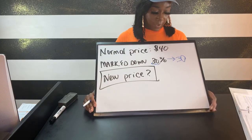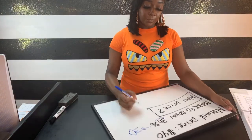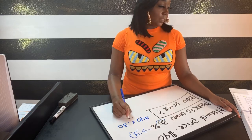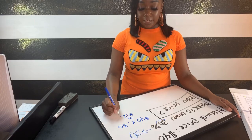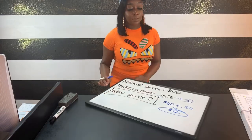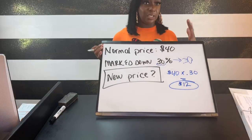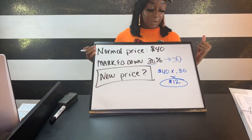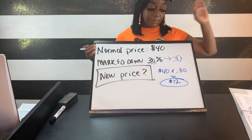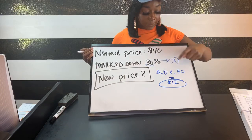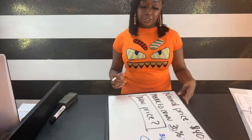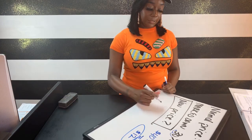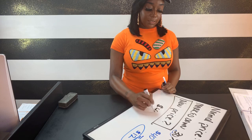We multiply our two values together: 40 times 0.3, which gives us $12. The difference between a percent markup and a percent markdown is up versus down — this is a markdown, so that's money we're taking off, meaning we subtract. For a markup we add. So we take the original $40 and subtract $12, which gives us $28 as the new selling price.